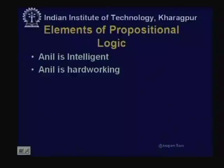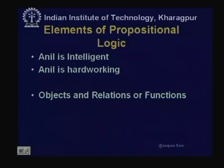Briefly speaking, whenever we speak in day-to-day life, whatever statements we make consist of propositions. These propositions — say 'Anil is intelligent' and 'Anil is hardworking' — are constituted of objects and relations or functions. Anil is an object; hardworking and intelligent are some functions or relations, depending on usage. A proposition can be true or false — 'Anil is intelligent' can be true or false, and 'Anil is hardworking' can be true or false. So any proposition in propositional logic can have either of two values: true or false.